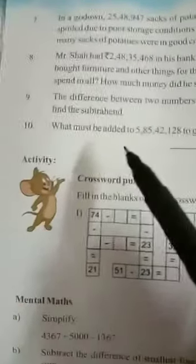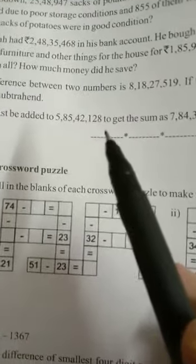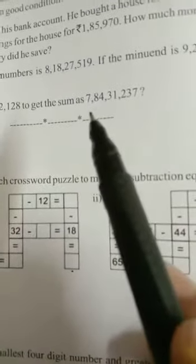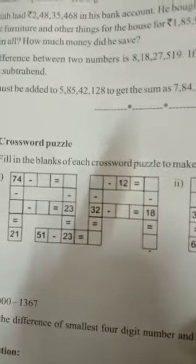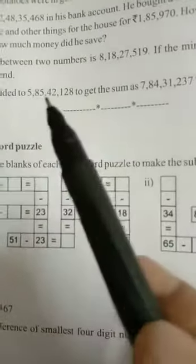Given here, what must be added to 5 crore 85 lakhs, 42,128 to get the sum 7 crore 84 lakhs, 31,237. Therefore, here, to get the number, you have to subtract this number from the sum.